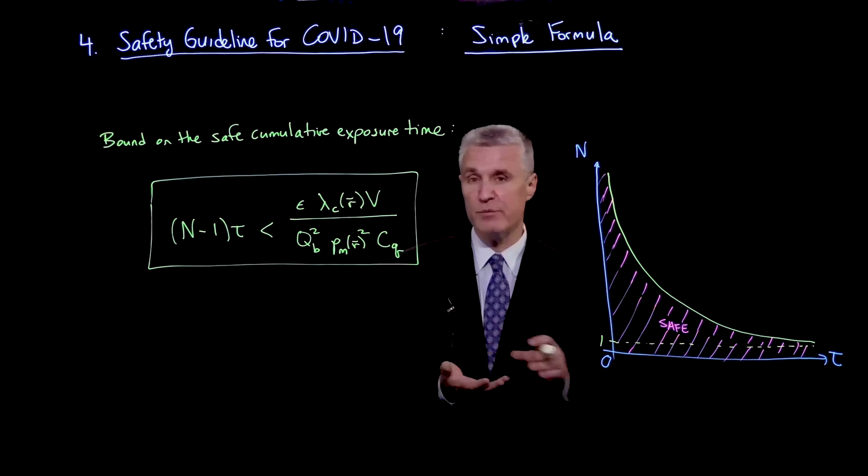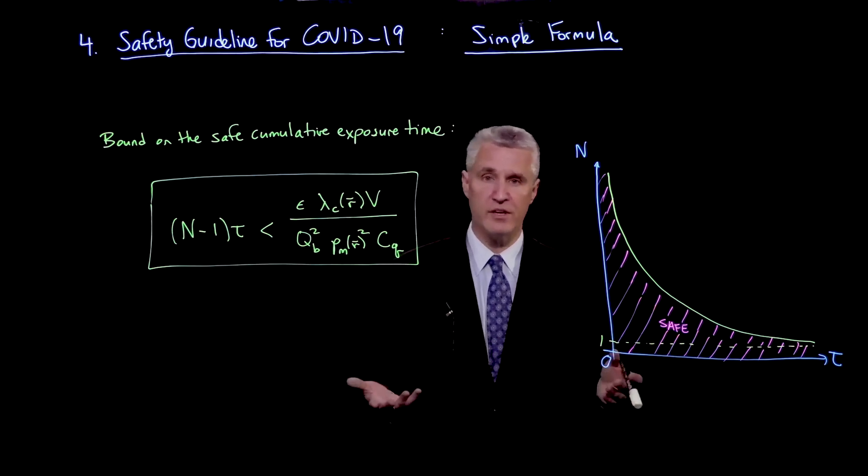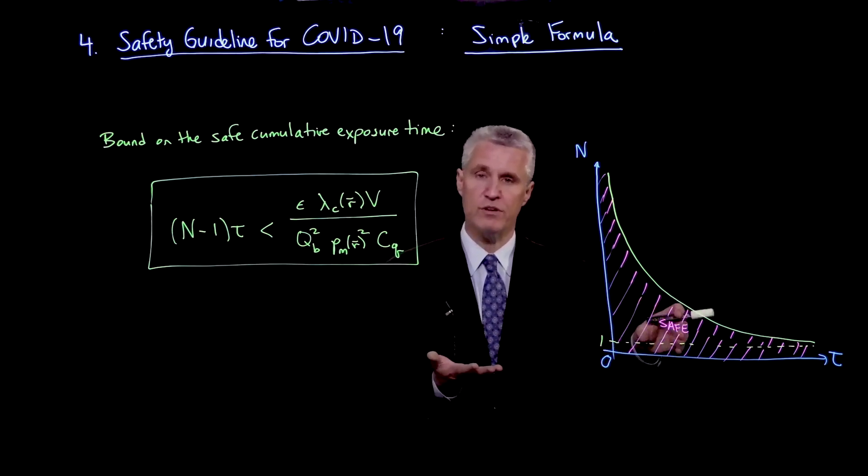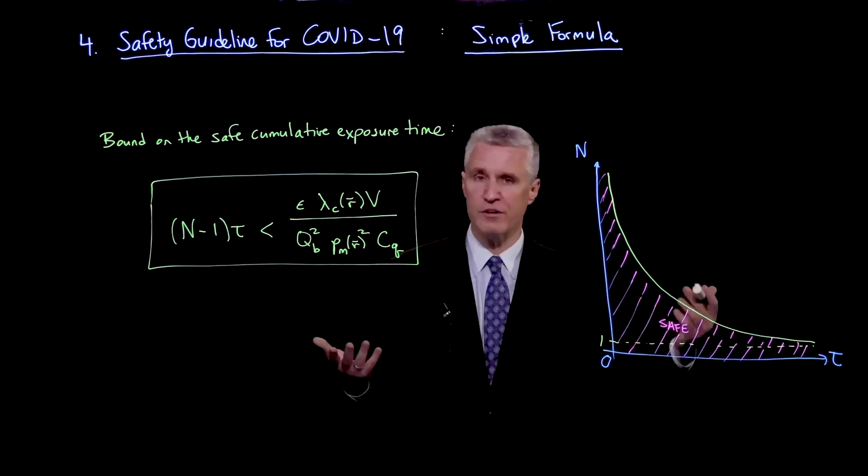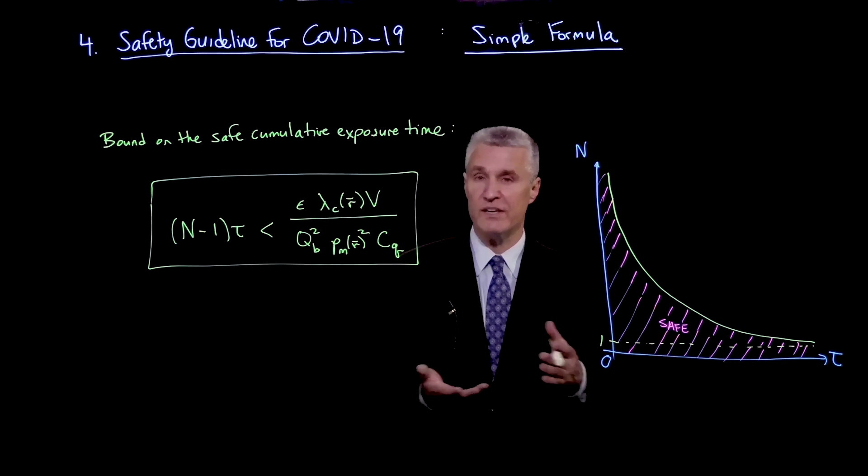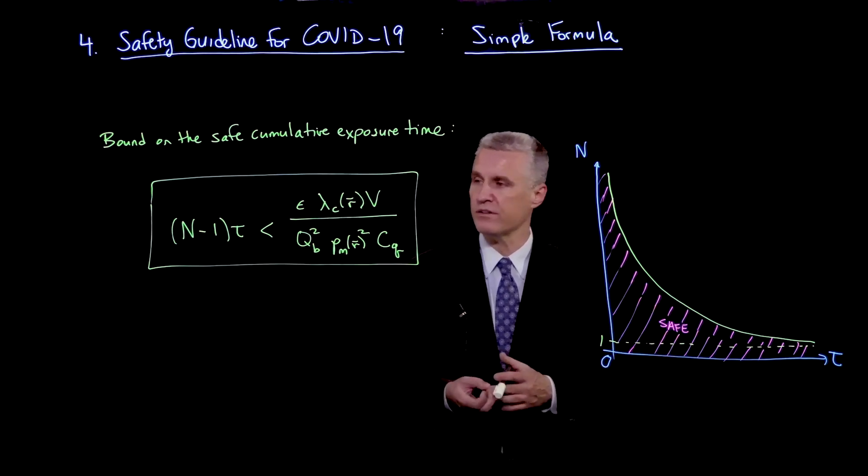The time tau does not need to be continuous. So if you think of a classroom or an office, you would be adding up the total time. So if this safe time is 100 hours, and you spend 10 hours a day, you might get 10 days, according to this calculation.